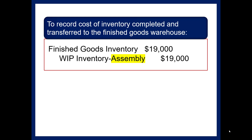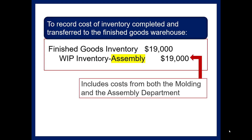Inventory has now been taken off the production line and put in the finished goods warehouse. Note that this $19,000 includes costs from both the molding and the assembly department — the cost accumulates from one department to the next, and more is added as inventory flows through each department.